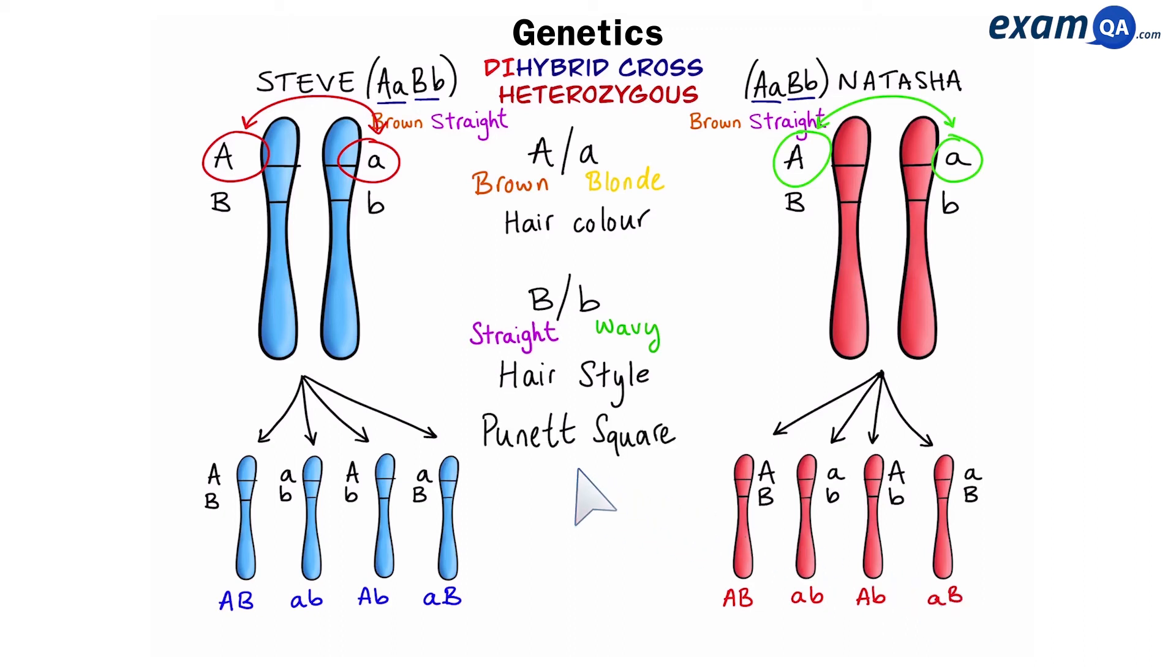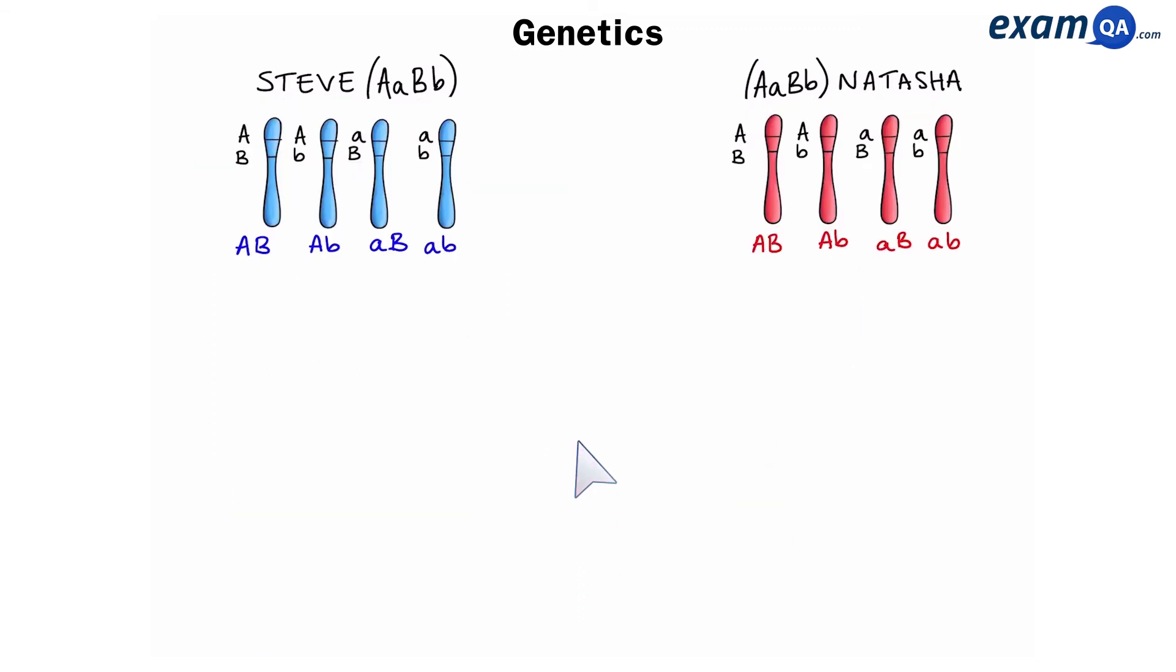Next, we're going to make a Punnett square. However, notice, we have four chromosomes for each individual. 4 times 4 is 16. So, we're going to need a much bigger square this time. Okay, so we have all the chromosomes. We'll just quickly remind ourselves. So, we'll say that gene A is gene 1, and gene B is gene 2. Remember that for later.